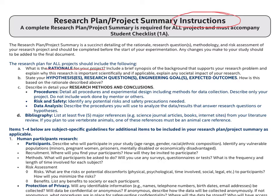This year, the students are expected to establish the relevance of the study by doing some background research on the problem. Once the research problem is identified based on the background information, a research question is proposed and some hypothesis stated. If it were an engineering project, maybe an engineering goal is more relevant and the expected outcomes are stated.